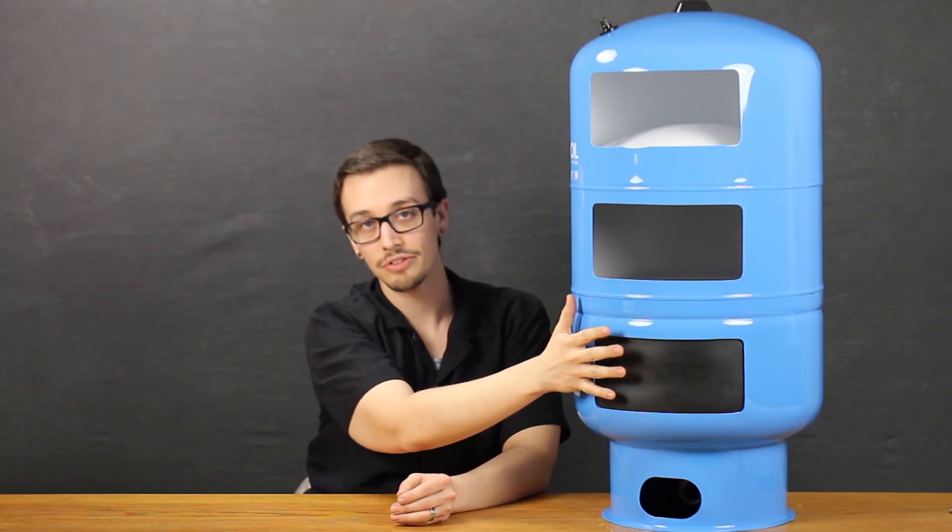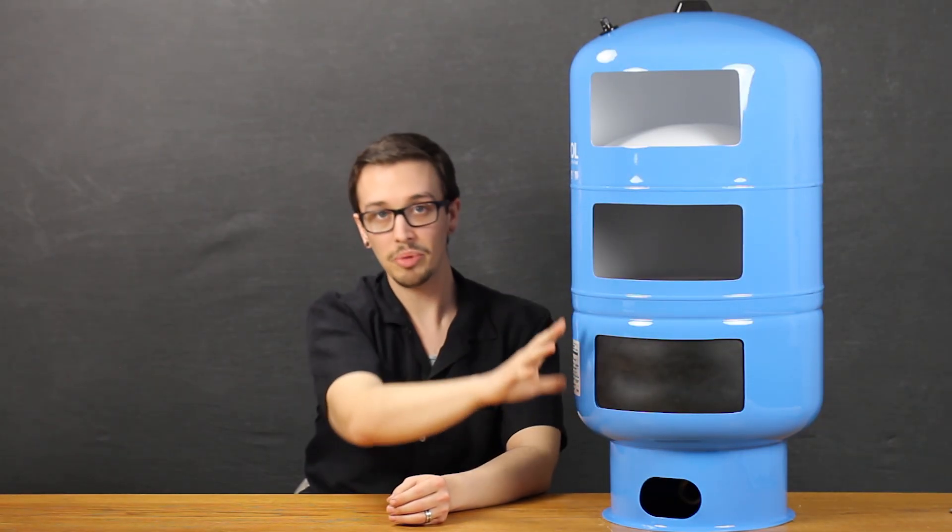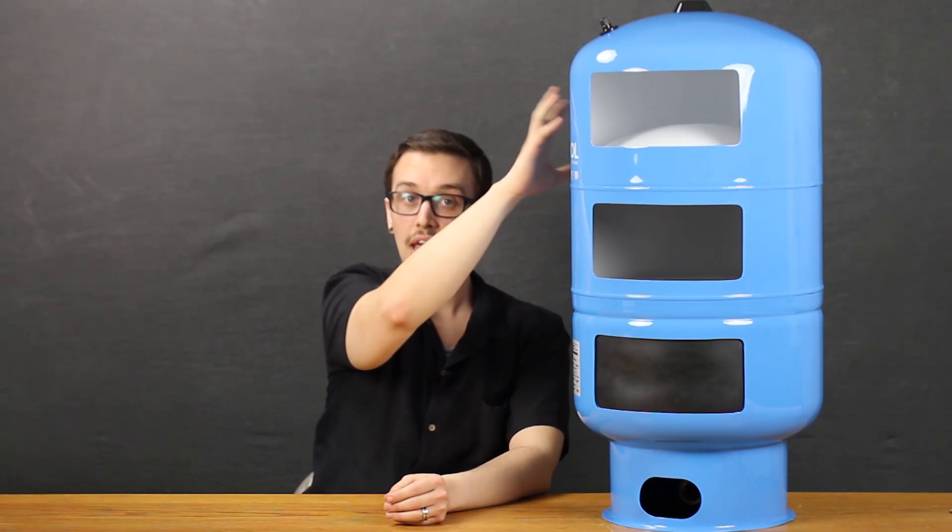Now, just to give you an idea, we have a pressure tank on the side of me here that has been cut out to showcase how it works. Now, the lower section of the tank is where the diaphragm is. And this weld here is essentially the line that marks the top of the diaphragm. As the pressure tank fills with water, this diaphragm expands upward and this area becomes filled full of water.